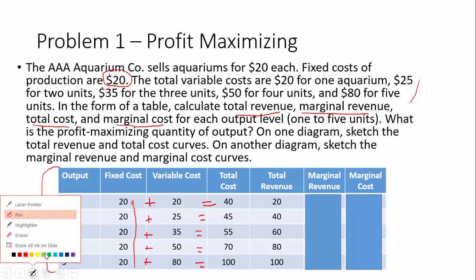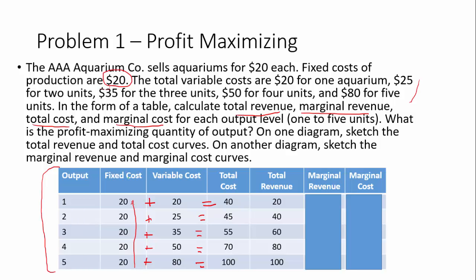Now we're going to talk about our revenue side. The total revenue is calculated by taking our price — in this case it's $20 — and multiplying that by the quantity we're outputting. So each of the output levels are going to be multiplied by $20, which is our price, and that equals the total revenue at that output level.